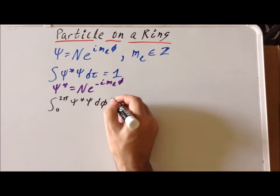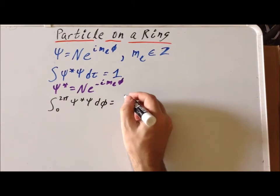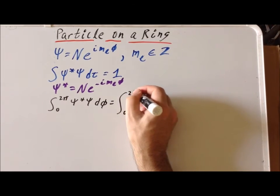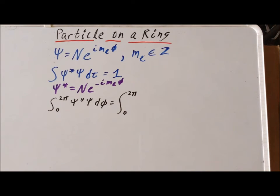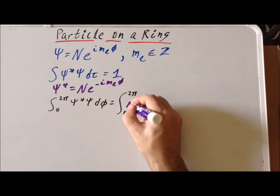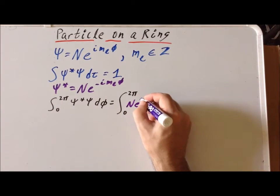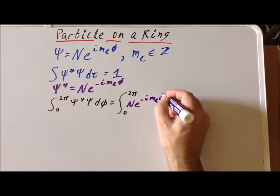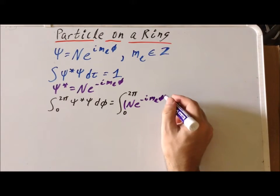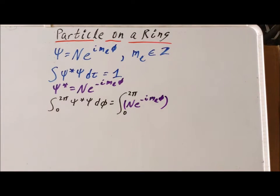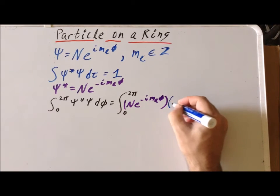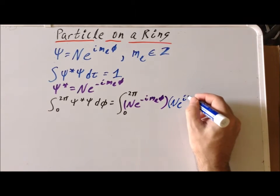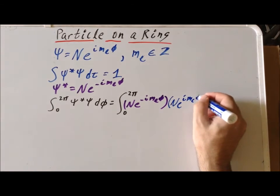So what does that give us? Well, we end up getting between 0 and 2 pi, psi star is n times e to the minus i m sub l phi, psi itself is n times e to the i m sub l phi d phi.